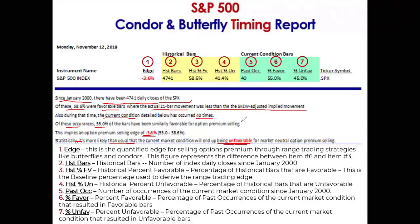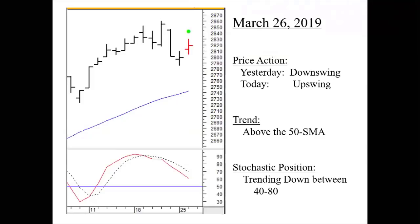You could flip a coin and theoretically do better than taking the market condition that occurred on November 12th. So statistically, it's more likely than usual that the current market condition will end up being unfavorable. With that information, as a range trader doing condors and butterflies, you might say: I'm going to wait until I see something positive. Why would I want to put something on if it's more likely than normal I'm going to end up having to do some fancy footwork? You may taper off or adjust the amount of contracts you're going to use — it's up to each individual, but this information lends itself well to making more accurate probabilistic decisions.